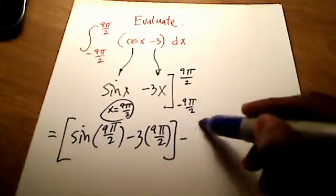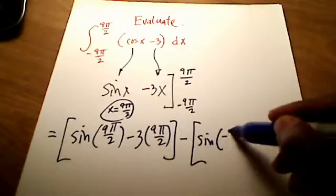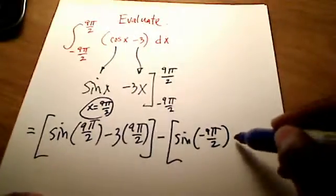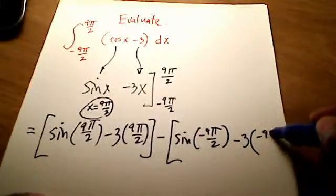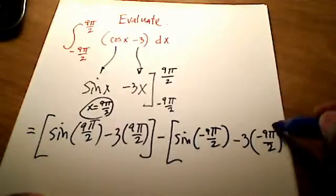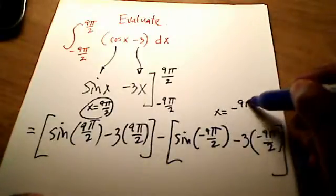And minus the quantity sine of negative 9π over 2 minus 3 times the quantity negative 9π over 2. And in this case here, everywhere I saw an x, I plugged in a negative 9π over 2.